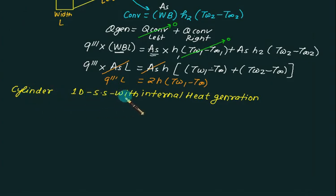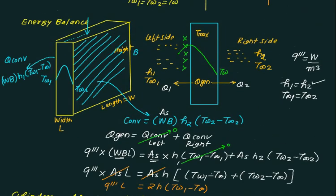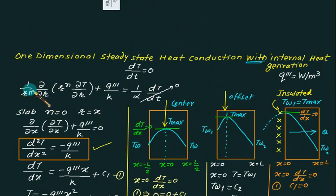Now we will discuss the cylinder one dimensional steady state with internal heat generation. Our approach will remain same. We have same equation only that n is replaced by 1. We have a steady state model so dt by dt equal to 0, and we have generation so q triple dash by k is also present.